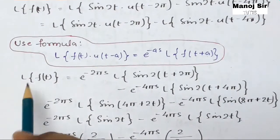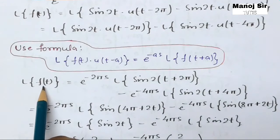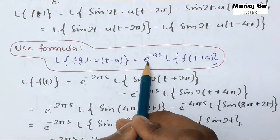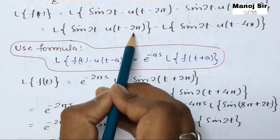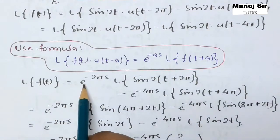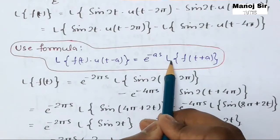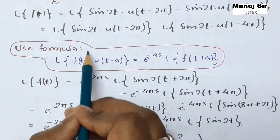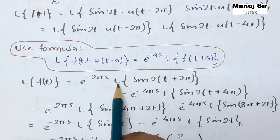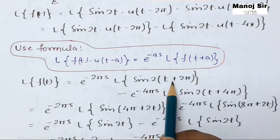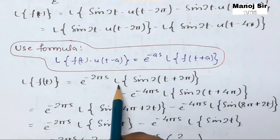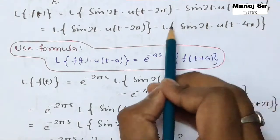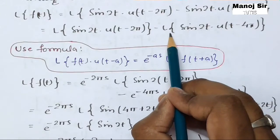Applying formula three to the first term: L{f(t)} = e^(−2πs) · L{f(t + 2π)}. Here f(t) = sine(2t), so we replace t with (t + 2π) to get L{sine(2(t + 2π))}, which becomes L{sine(2t + 4π)}.